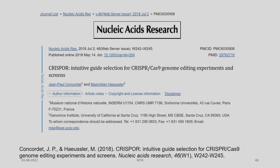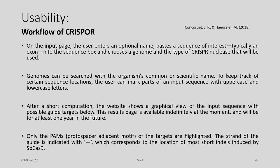Another tool available is CRISPR, developed by Concordet and Haussler. The user enters an optional name, pastes a sequence of interest typically an exon into the sequence box, and selects a genome and the type of CRISPR nuclease. Genomes can be searched by common or scientific name, and parts of the input sequence can be marked with upper case and lower case letters. After computation, the website shows a graphical view of the input sequence with possible guide targets, and the result page is available indefinitely.